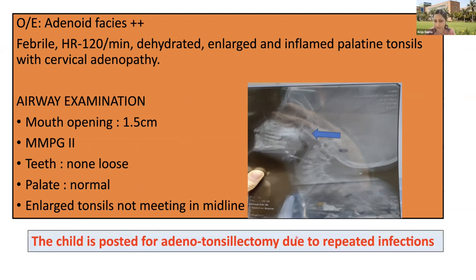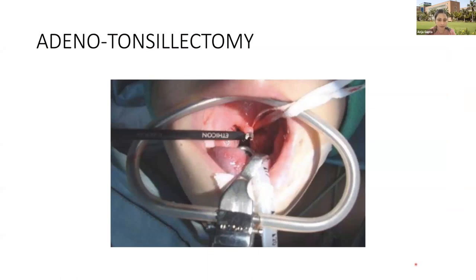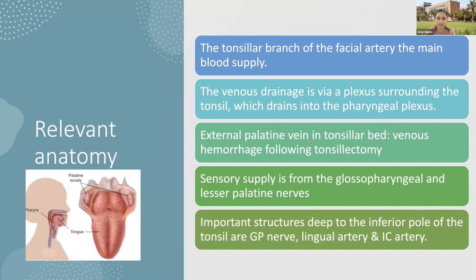The child was posted for adenotonsillectomy due to history of repeated infections. Coming to anesthetic considerations, the relevant anatomy is important during management. The tonsillar branch of the facial artery is the main blood supply to the tonsils. Venous drainage is via the plexus surrounding the tonsil which drains into the pharyngeal plexus. The external palatine vein in the tonsillar bed is the main cause of venous hemorrhage during tonsillectomy.